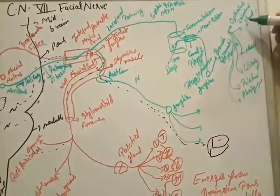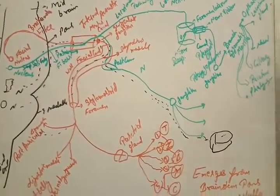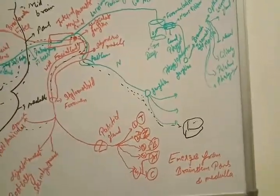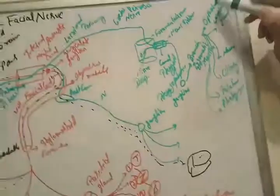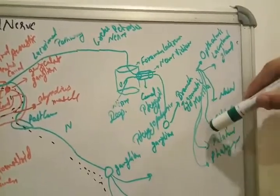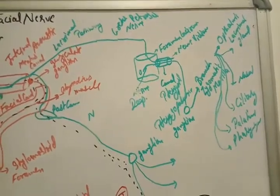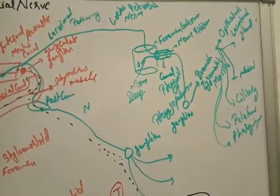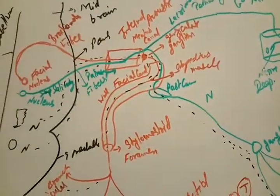From the pterygopalatine ganglion, signals are transmitted via branches of the zygomatic and maxillary nerves to reach the lacrimal branch, supplying the lacrimal gland, nasal gland, ciliary, palatine, and pharyngeal glands. If there is a defect in this lacrimal pathway, lacrimation decreases, nasal secretion decreases, and taste decreases.